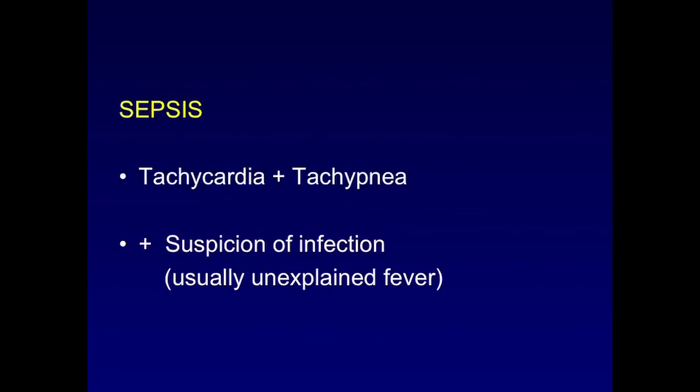Okay. Now, in children, we don't draw blood like we do in adults. So we define sepsis clinically. So sepsis is the presence of tachycardia, which is a fast heart rate, and tachypnea, which is a fast respiratory rate, and a suspicion, which is usually a fever. So if a kid has a fever and is breathing fast or has a fast heart rate, we suspect sepsis. Next slide, please.